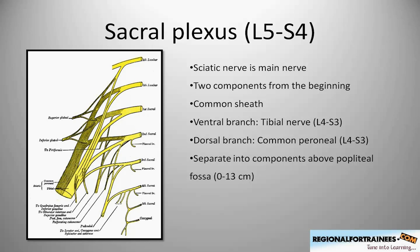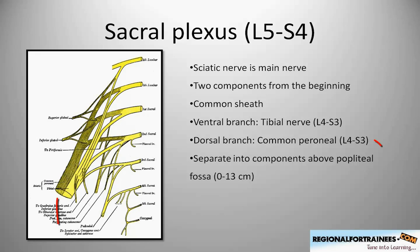The sciatic nerve is the main branch of the sacral plexus, which is derived from L5 to S4 nerve roots. It comprises two components from the very beginning, enclosed within a common sheath. This is the tibial nerve, derived from the ventral branches of the anterior rami of L4 to S3, and the common peroneal nerve, derived from the dorsal branches of the same nerve roots.